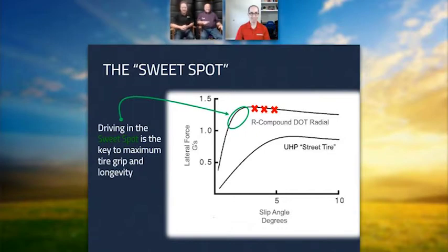We have the vertical axis as lateral force, the horizontal axis is slip angle. You can see that the R-compound tire ramps up to maximum lateral force quicker than a street tire does. But you get up to that peak, and when you go over that peak where those red X's are, that's when you're wasting the tire.